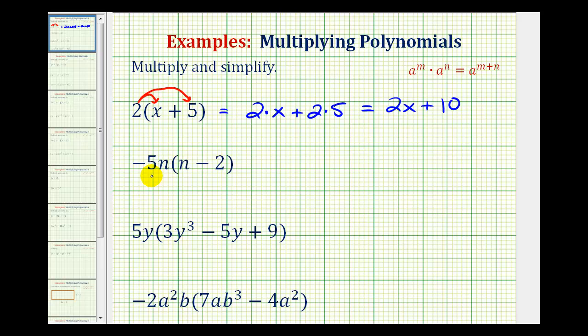For the second example, we'll distribute -5n. For -5n times n, we're multiplying, so we're going to add the exponents on the n, so we'll have -5n². Remember, minus 2 is equivalent to plus negative 2, so we'll think of the second product as -5n times -2, which is positive 10n.